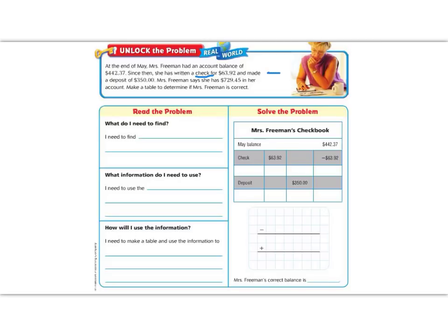She also made a deposit for $350. A deposit means I put money in. That is a positive, I'm going to add. Ms. Freeman says she has $729.45 in her account. Our job is to make a table to decide if Ms. Freeman is correct.